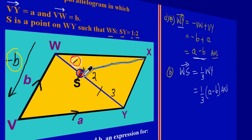We stated that WS is one part out of three, and then WX would be the same as a. Remember in a parallelogram, opposite sides are parallel and equal, so this side is also a because down here is a.